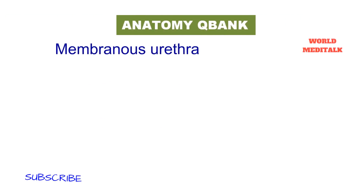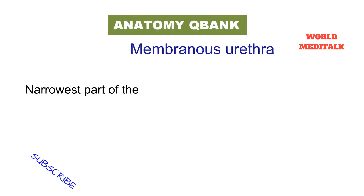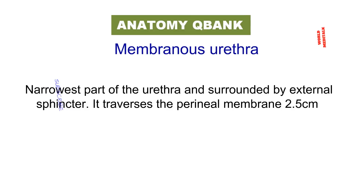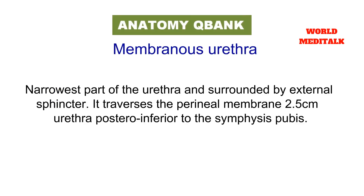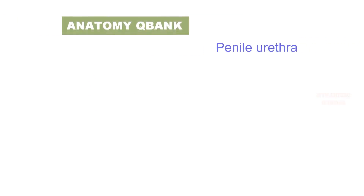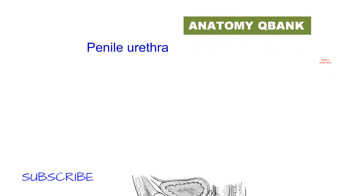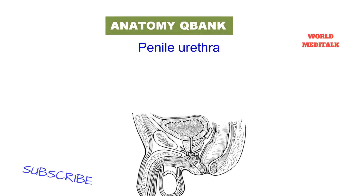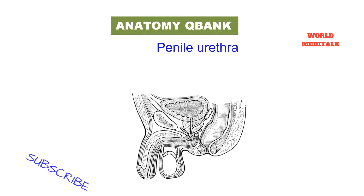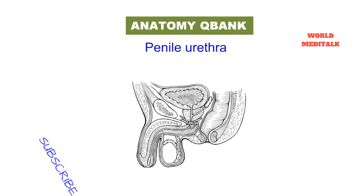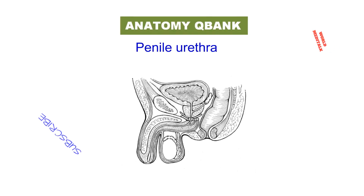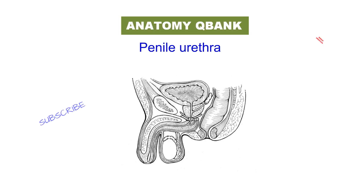The membranous urethra is the narrowest part of the urethra and is surrounded by the external sphincter. It traverses the perineal membrane 2.5 cm posterior and inferior to the symphysis pubis. The penile urethra travels through the corpus spongiosum on the underside of the penis and is the longest urethral segment. It is dilated at its origin as the intrabulbar fossa and again in the glans penis as the navicular fossa. The bulbo-urethral glands open into the spongy part of the urethra 2.5 cm below the perineal membrane.